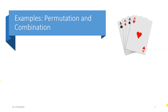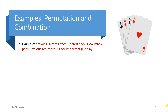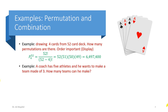Let's do some examples. The first question says: drawing four cards out of 52 — how many permutations are there? The question specifies permutations, meaning the order is important, as if we are displaying the cards. Using the permutation formula — taking 4 out of 52 — it is 52 factorial divided by (52 minus 4) factorial. This gives 52 times 51 times 50 times 49, because there are 52 possibilities for the first card, 51 for the second, and so on. The total is over six million.